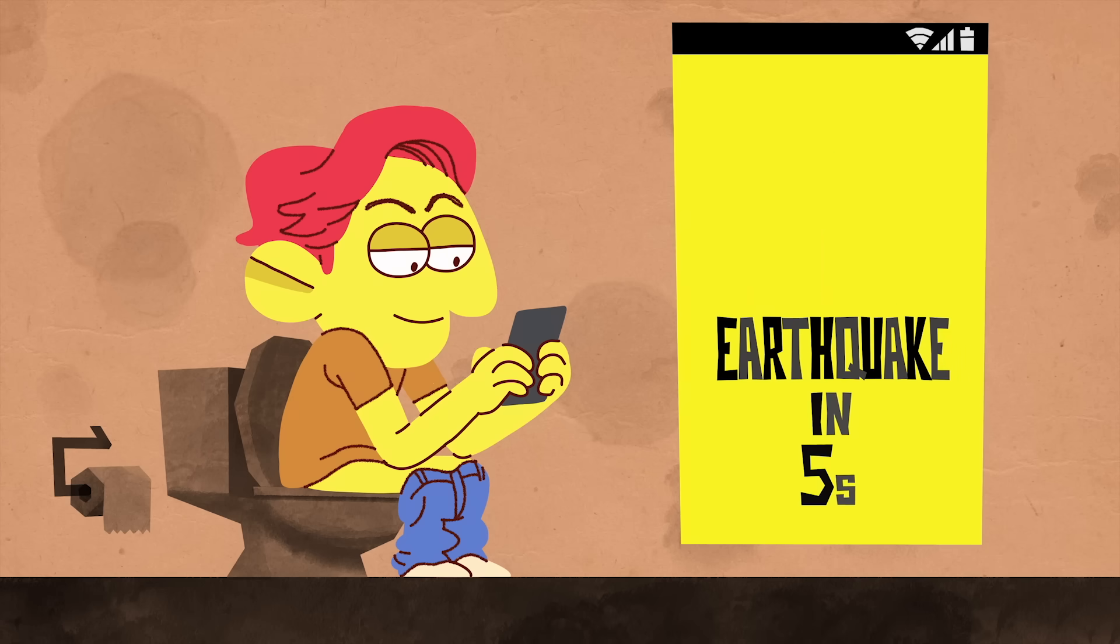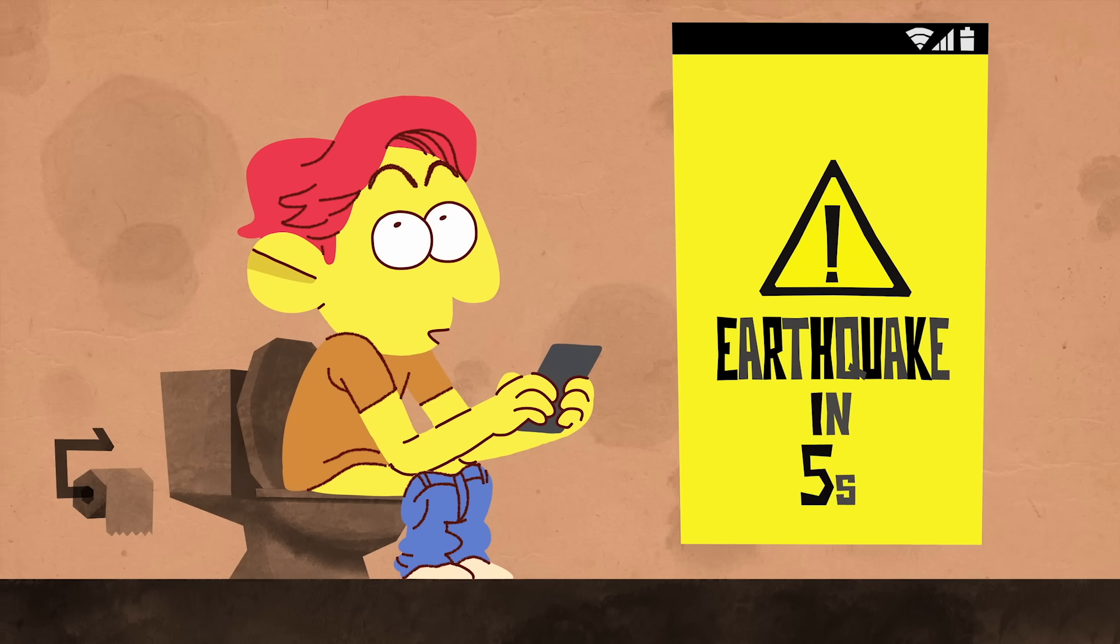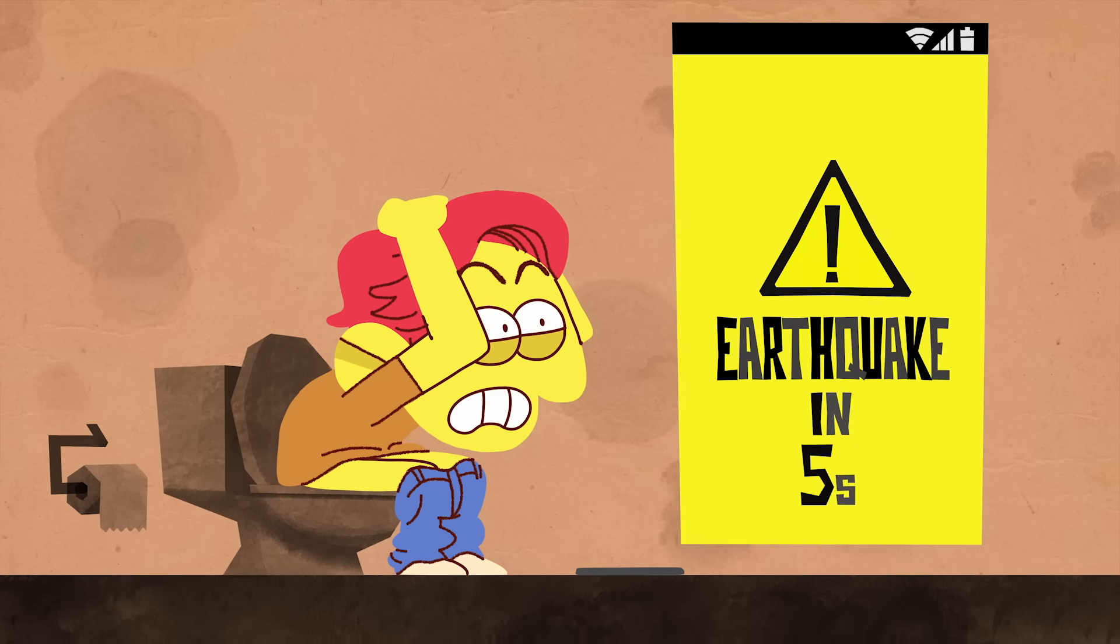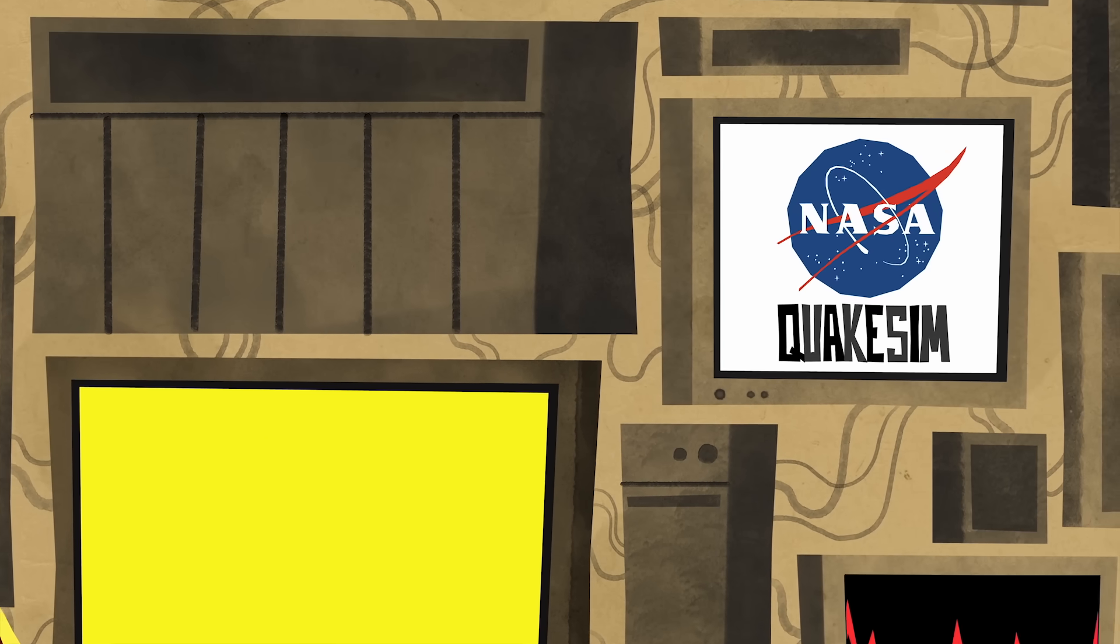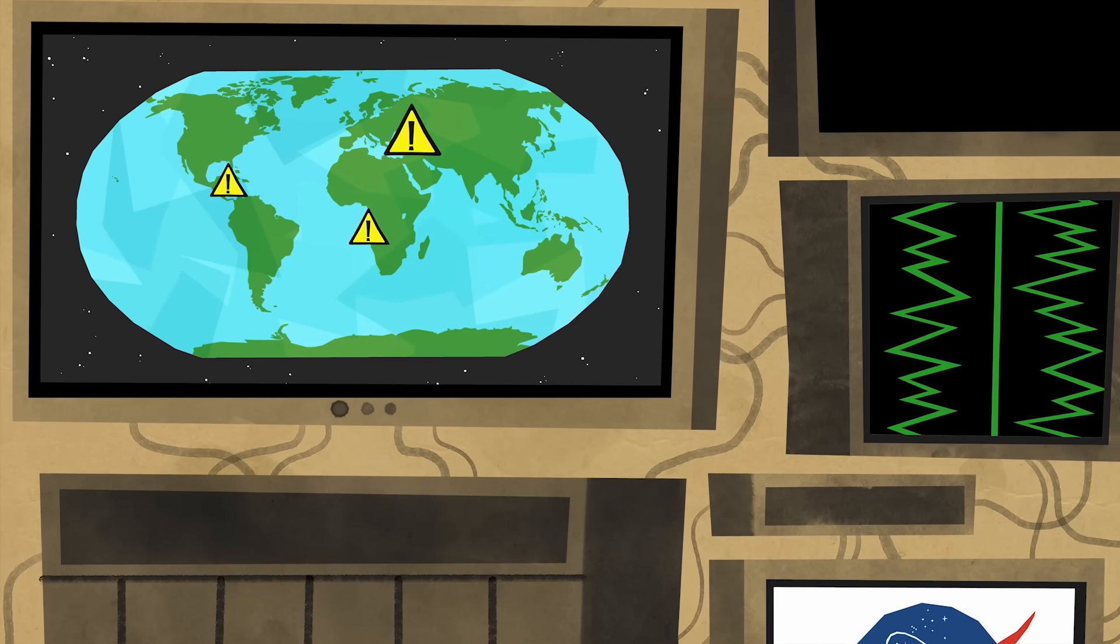Unfortunately, phones might not be able to provide the advance notice needed to enact safety protocols. But such detailed readings would still be useful for prediction tools like NASA's QuakeSim software, which can use a rigorous blend of geological data to identify regions at risk.